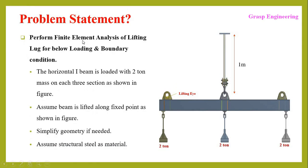This slide represents the actual problem statement. We need to perform FEA of the lifting beam for the given loading and boundary conditions. This is the lifting beam schematic, which consists of three lifting eyes, and at the bottom there is a two-ton weight at each point, so total six tons which the lifting beam is carrying. In Part 1 we discussed lifting performed through the central lifting eye.